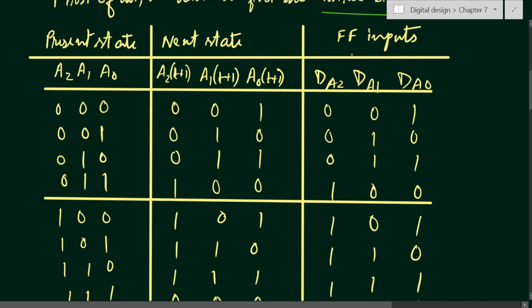We have to find out the flip-flop inputs. Suppose we have three flip-flops whose outputs are A2, A1, and A0. For finding out these flip-flop inputs we use the characteristic equation of the D flip-flop: Q(n+1) = D. That means whatever we have at the input of the D flip-flop will come at the output — the next state output is exactly equal to the present D input.